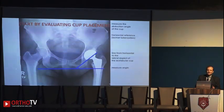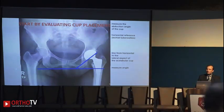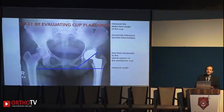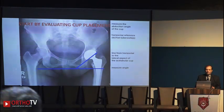Acetabular inclination is measured using a horizontal line at the ischial tuberosity and a line drawn to the lateral wall of the acetabulum; this angle should be around 45 to 50 degrees. A horizontally placed cup gives more stability but reduces the moment of abduction. If acetabular inclination is more than 50–55 degrees, that is called a vertical acetabulum and can lead to dislocation.